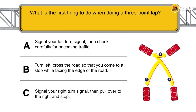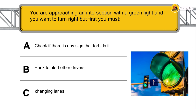What is the first thing to do when doing a three-point turn? Signal your left turn, then check carefully for oncoming traffic.